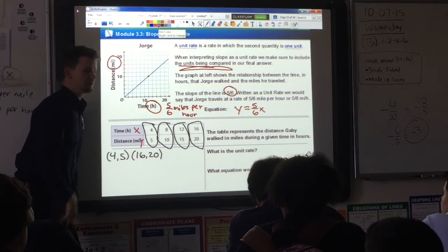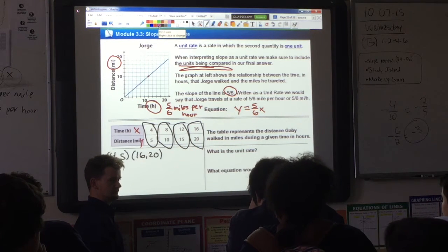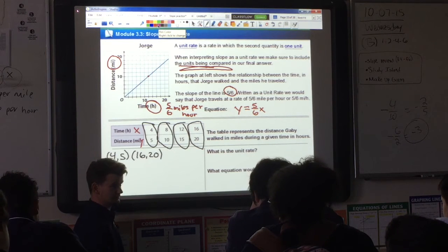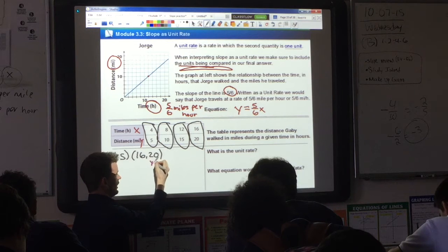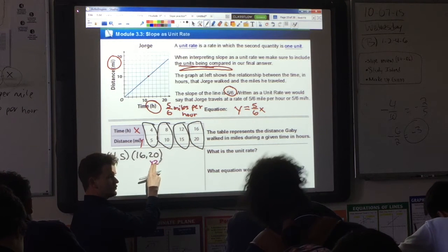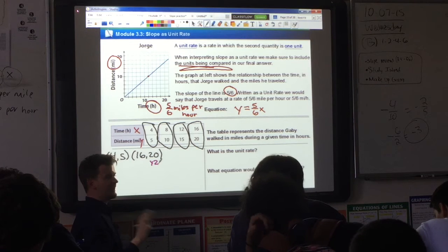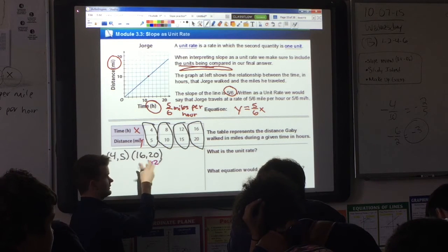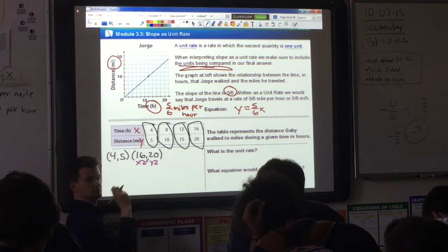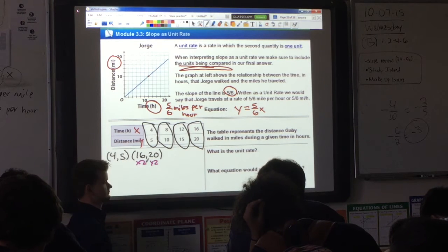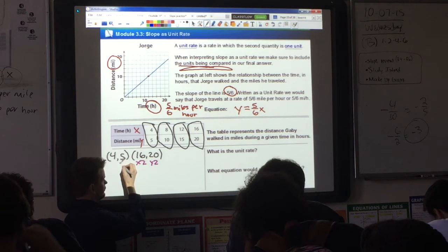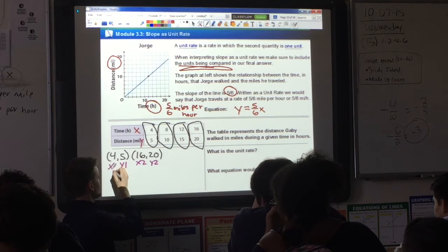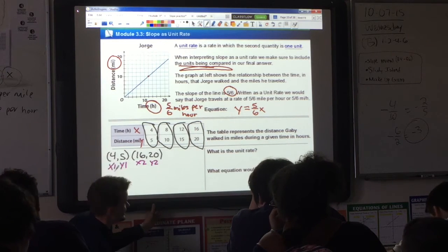What is going to be your y2? 20. 20 is the larger of the y values. That's going to be my y2. If this is your y2, everything else now falls into place. Madison, what is this going to be? The x2. Perfect. Rachel, what is this going to be? Y1. Lucas, what's this going to be? My x1. That's your x1.